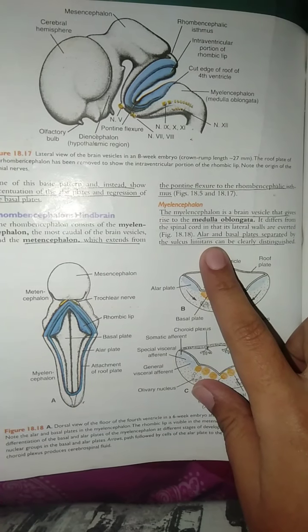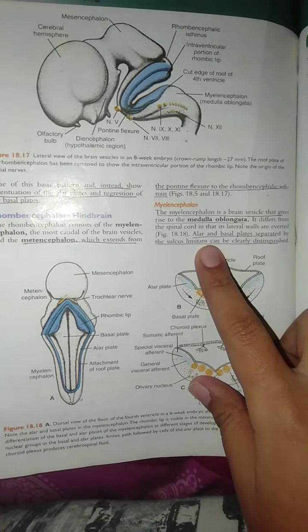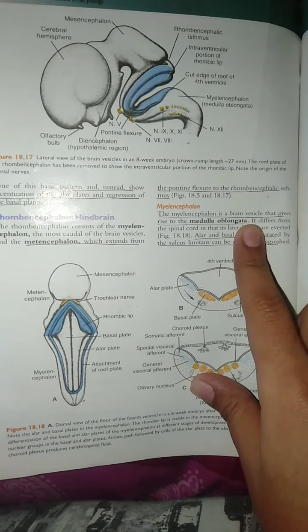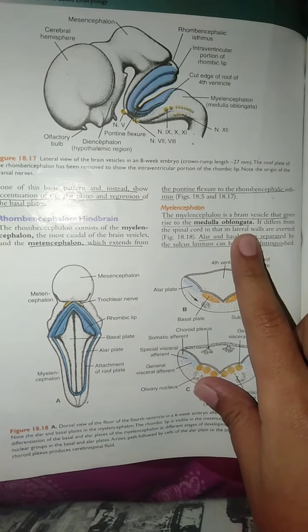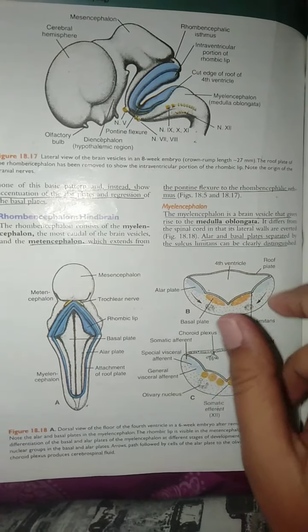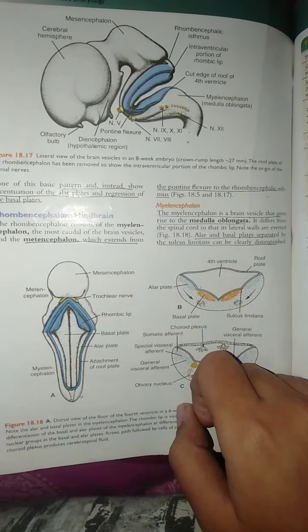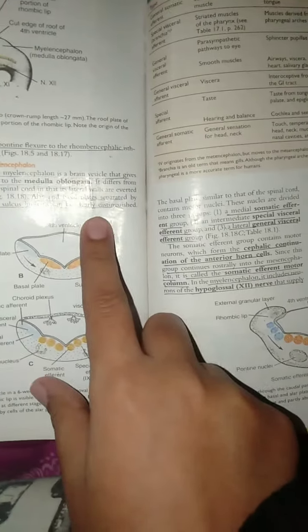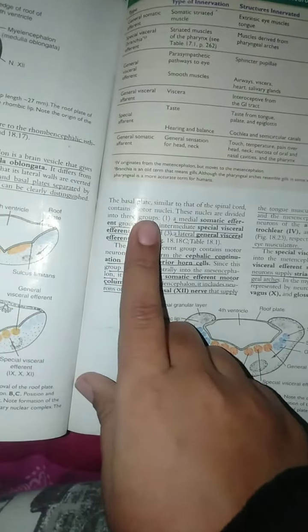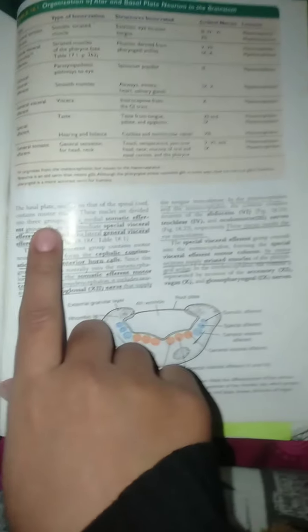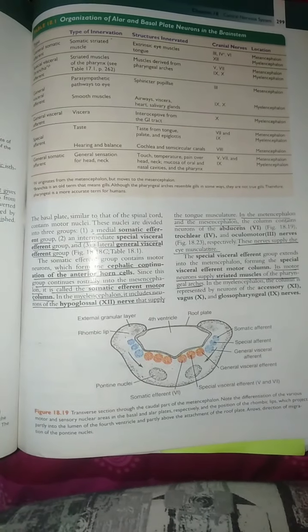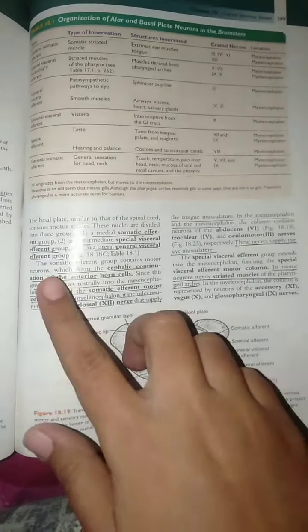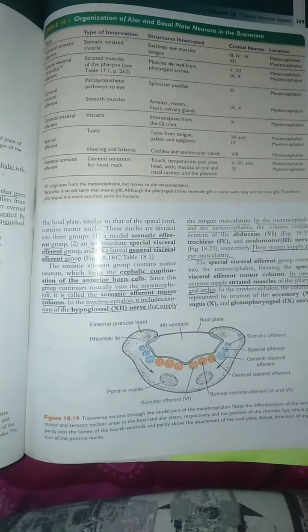Myelencephalon has formed the medulla oblongata. Now we have seen that the basal plates will be present. We know that the motor nuclei are present. We have divided into three groups. The basal plates have been divided into three groups.